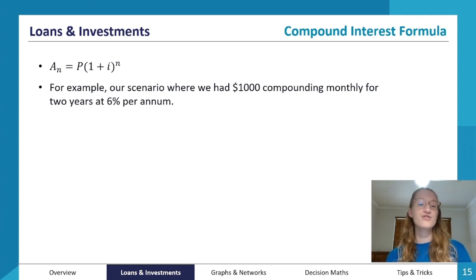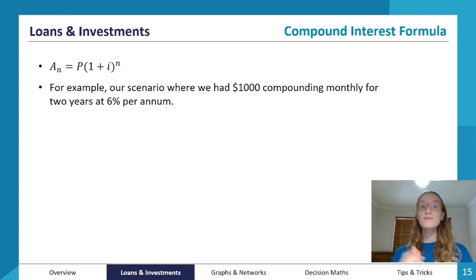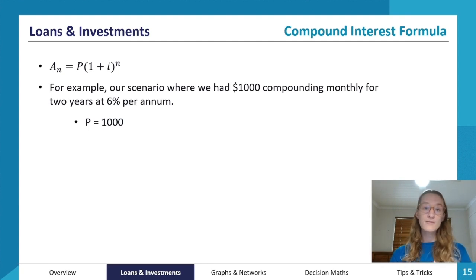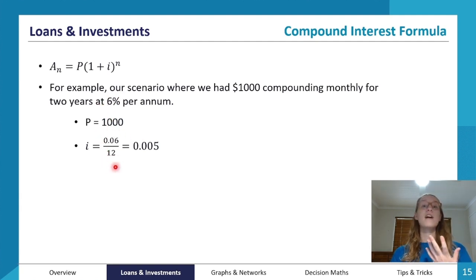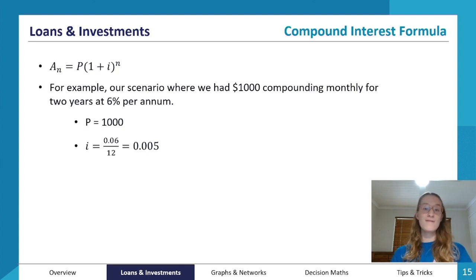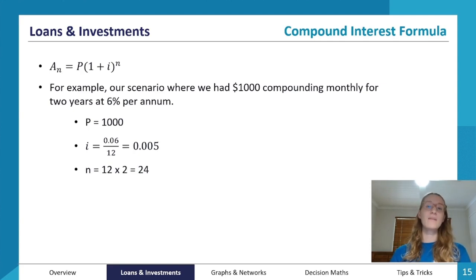Let's do a question to illustrate this further. We go back to our scenario: $1,000 as our initial value, compounding monthly for two years — so 24 compounds total — at 6% per annum. P equals $1,000. i equals 0.06 divided by 12, which gives 0.005 — this matches the r of 1.005 we found previously. And n equals 24.